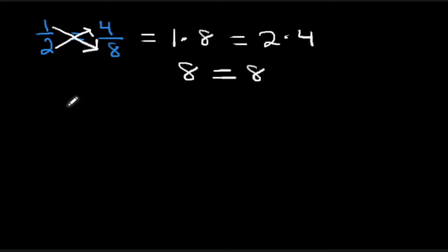So what happens if one of the four terms in a given proportion is a variable? Then you cross multiply and form an equation, or you can use equivalent fractions that share a common denominator. Let's go over an example using cross multiplication.